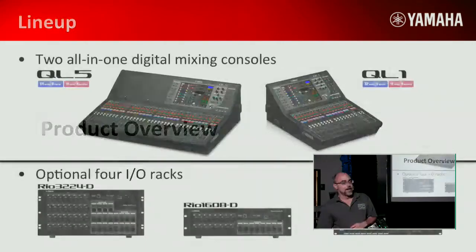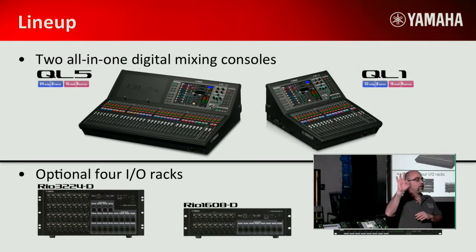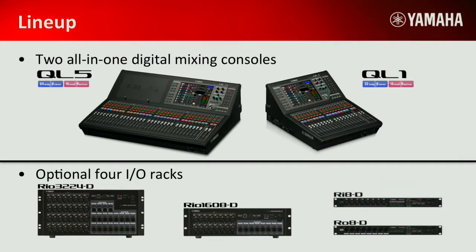The QL has two versions. Remember on the CL you have three versions — the five, three, and one. Here you have the QL5 and the QL1. They have the option of interfacing with the same Rio boxes as the CL — the 3224 and the 1608. I also mentioned two more options: the RI8 and the RO8. RI means remote input — eight input channels only. RO is remote output — eight output channels only. Both are via Dante and can be used with the CL as well.